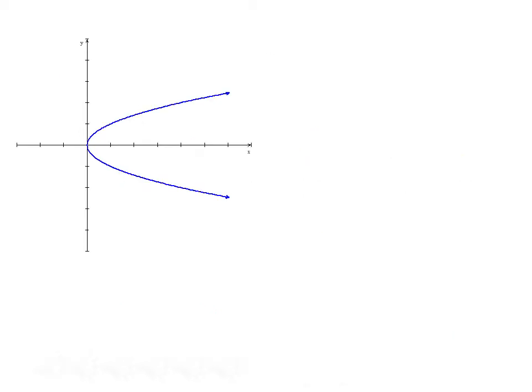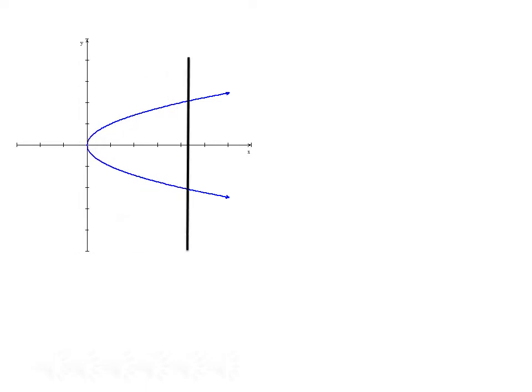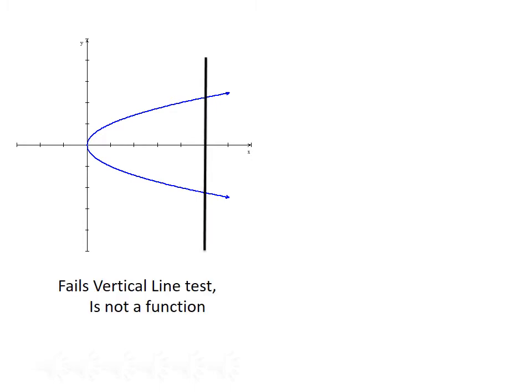Take a look at this graph and see if you can determine whether or not it's a function. We employ the vertical line test, and we see that the vertical line intersects the graph in two points at most places. So it fails the vertical line test, and this is not a function.